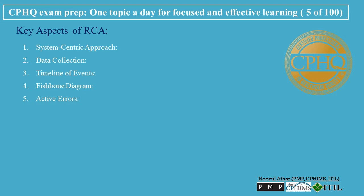Key Aspects 5 and 6 — Active Errors and Latent Errors: Active errors are direct errors that occur at the interface between humans and a system — for example, a nurse administering the wrong dose of medication. Latent errors are the hidden problems within a system that make active errors more likely, such as a medication storage system that's confusingly organized, increasing the chances of selecting the wrong drug.